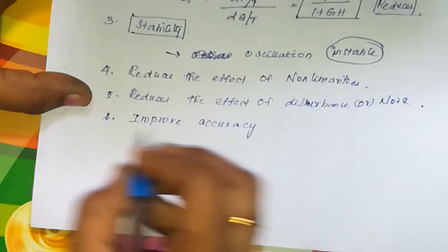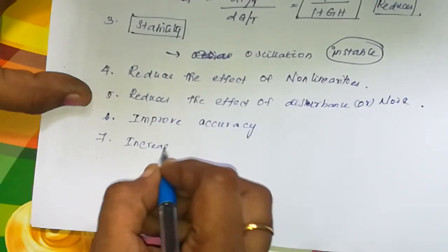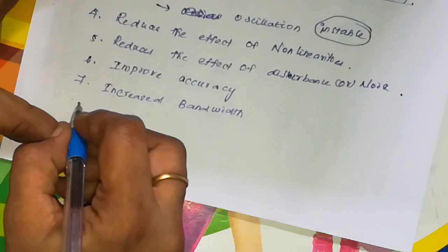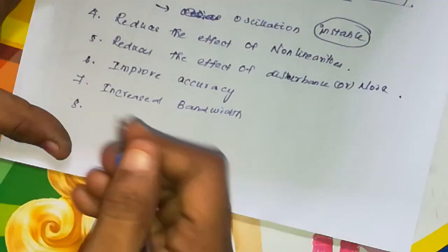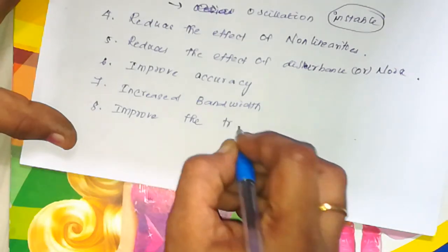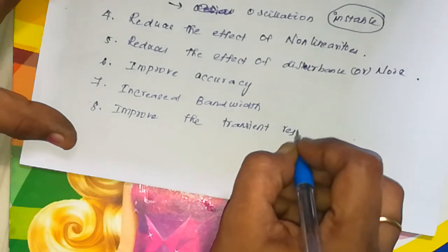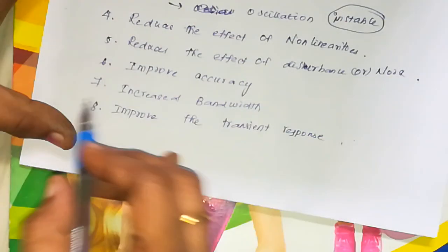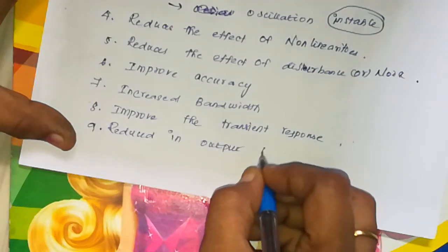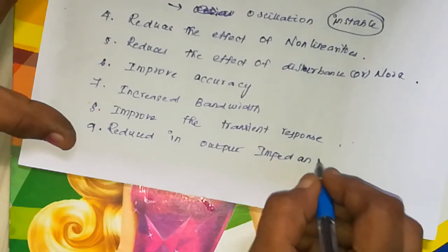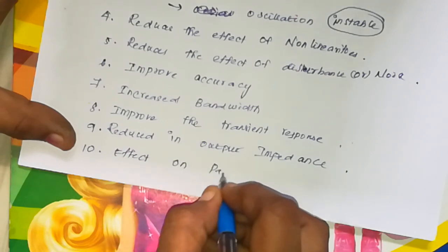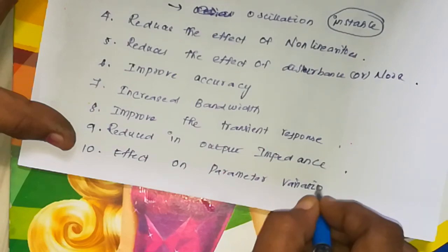Fifth, feedback increases or improves the accuracy of the system. Sixth, it increases the bandwidth, based on frequency response. Next, it improves the transient response. Finally, there is reduction in output impedance and an effect on parameter variation.